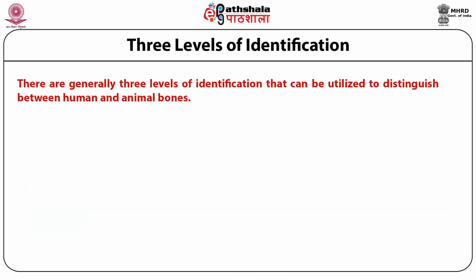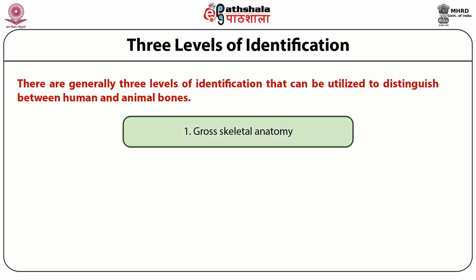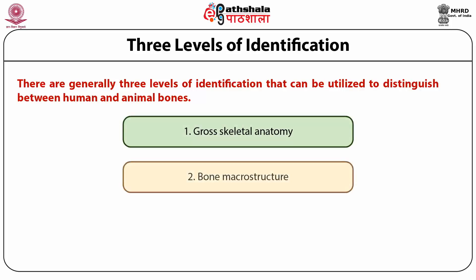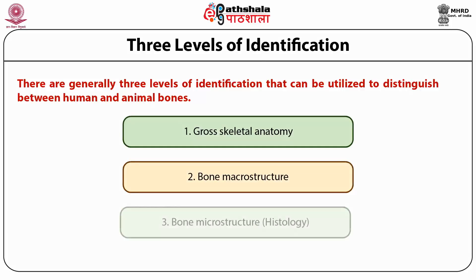There are generally three levels of identification that can be utilized to distinguish between human and animal bones: first, gross skeletal anatomy; second, bone macrostructure; and third, bone microstructure, that is histology.